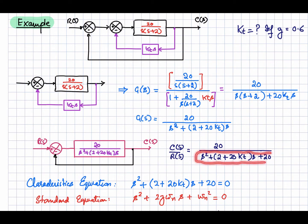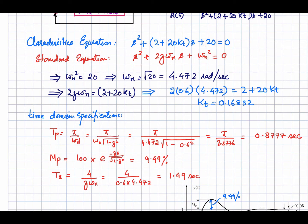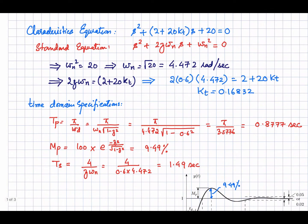The characteristic equation is s² + (2 + 20kt)s + 20. Comparing this with the standard second order characteristic equation s² + 2ζωn·s + ωn², we can say that ωn² = 20. From here we calculate ωn, which equals 4.472 radians per second — that's the natural frequency of the second order system.